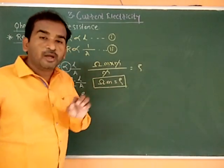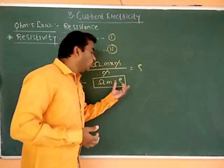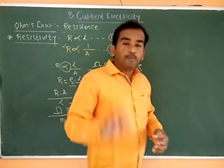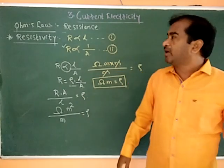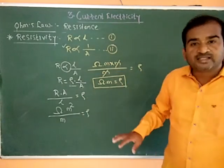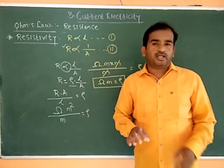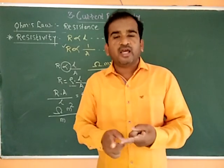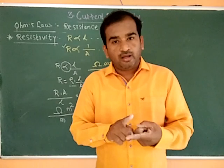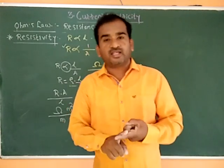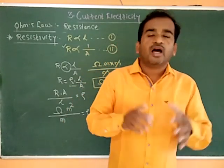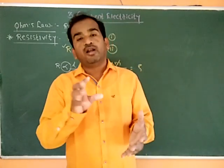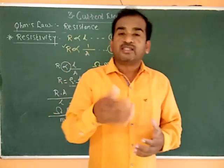The unit of resistivity is ohm-meter. Now, we can use different materials to understand resistivity. The materials include copper, aluminum, silver, and diamond.